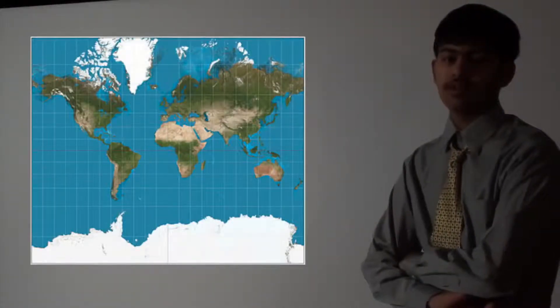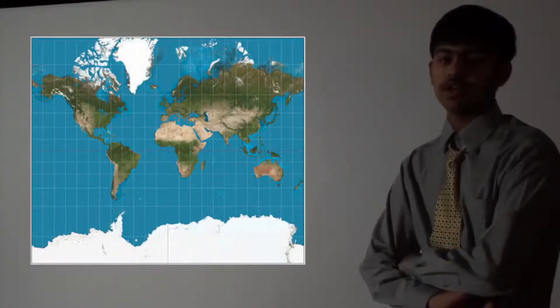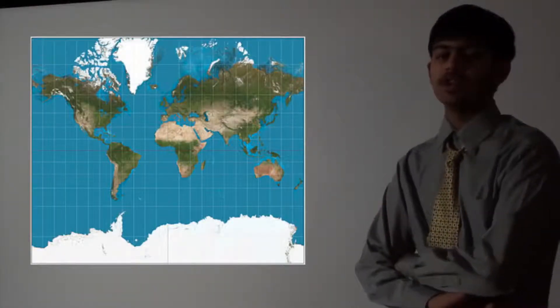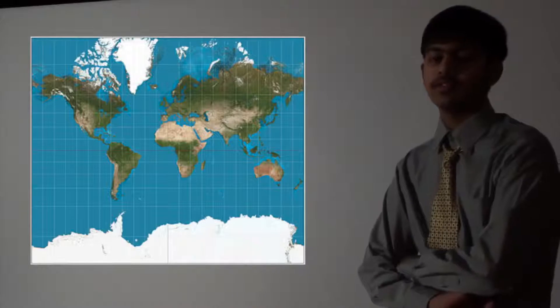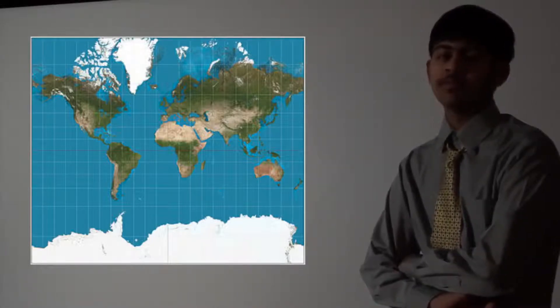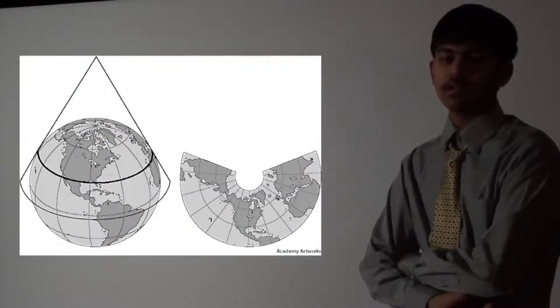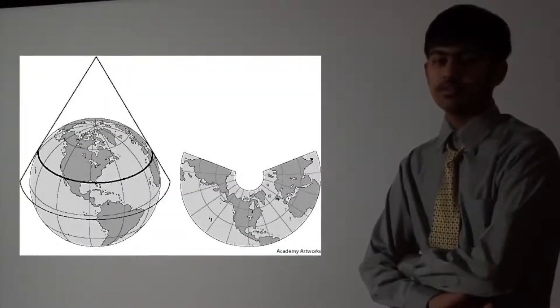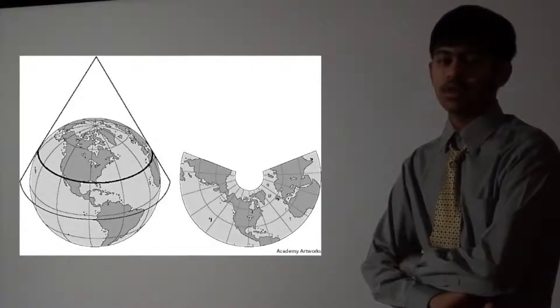Cylindrical projections, also known as Mercator projections, show the Earth as if a cylinder was wrapped around the planet. Conic projections also show a cone that has been rolled out.